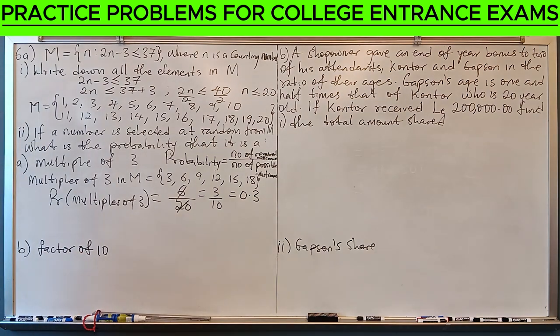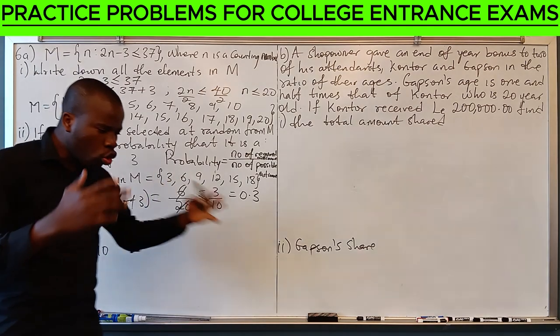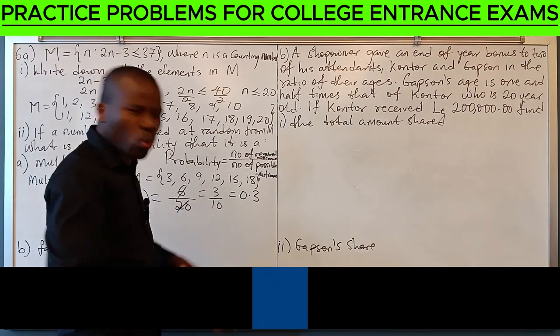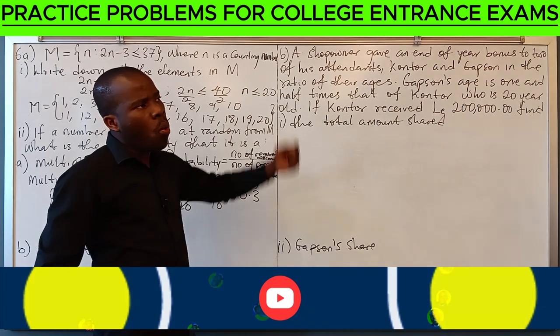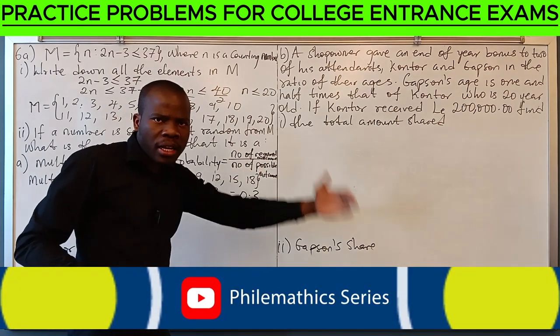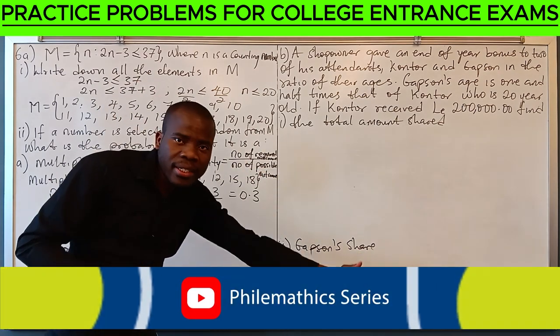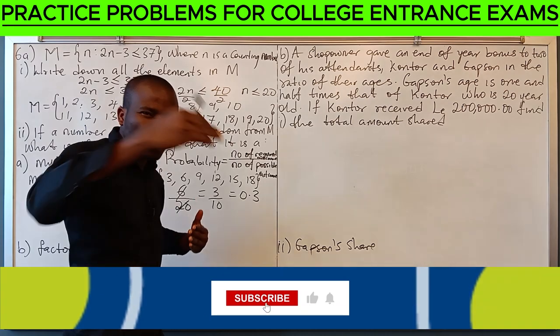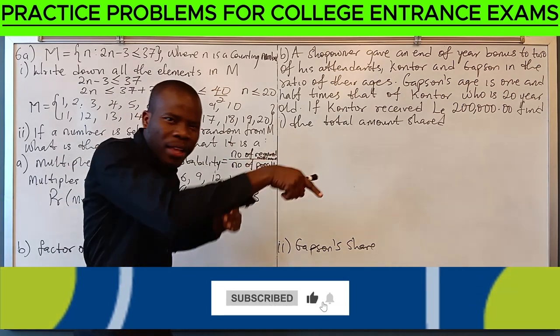The second one says, factors of 10. Factors of 10 are numbers that can divide 10 without remainder. Whilst multiples of 3 are numbers 3 can divide, factors of 10 are numbers that divide 10 without remainder.